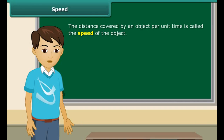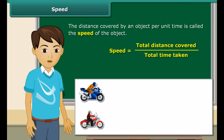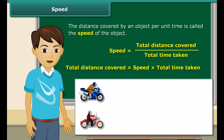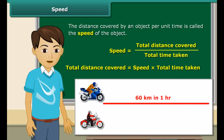The most convenient way of finding out which object moves faster is to calculate and compare the distances covered by all objects per unit time. The object that covers a greater distance per unit time is faster. The distance covered by an object per unit time is called the speed of the object.